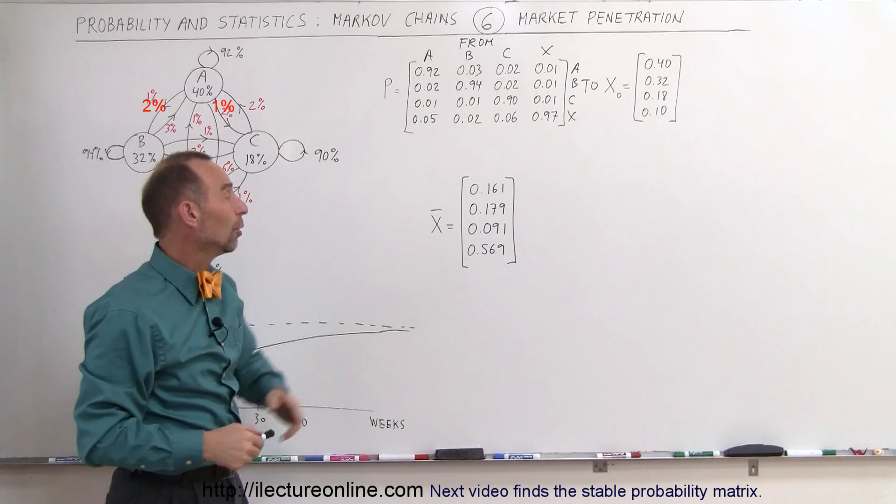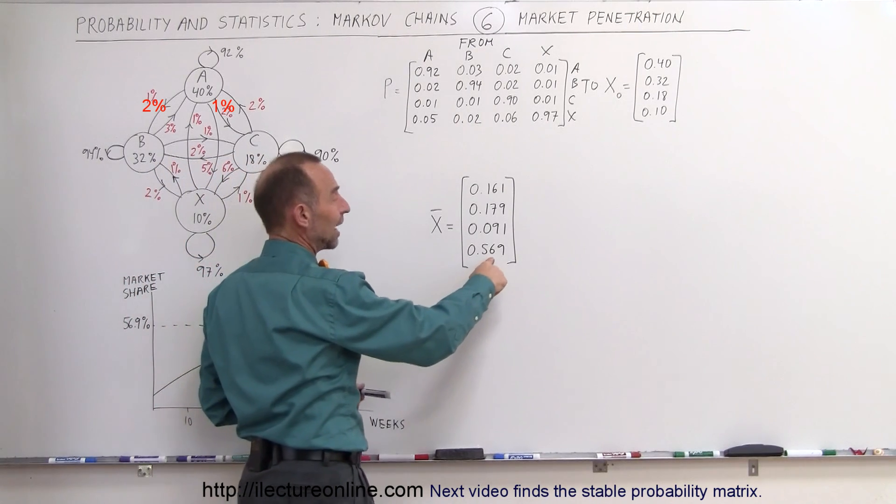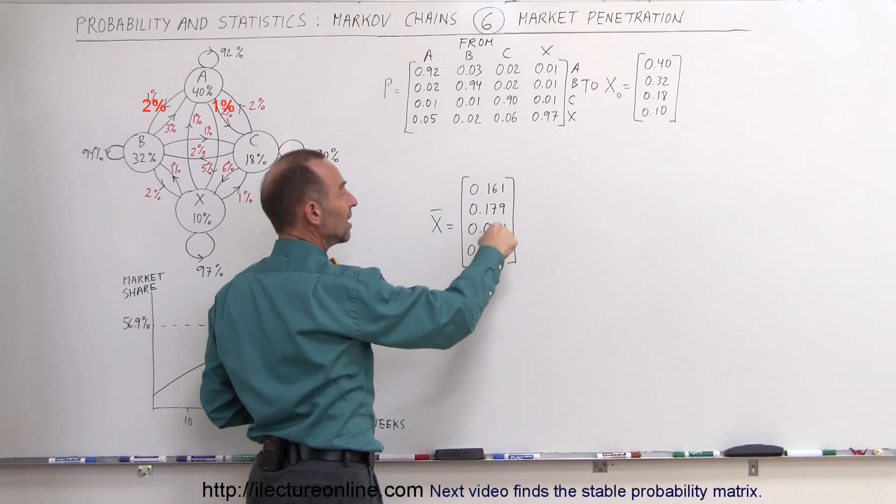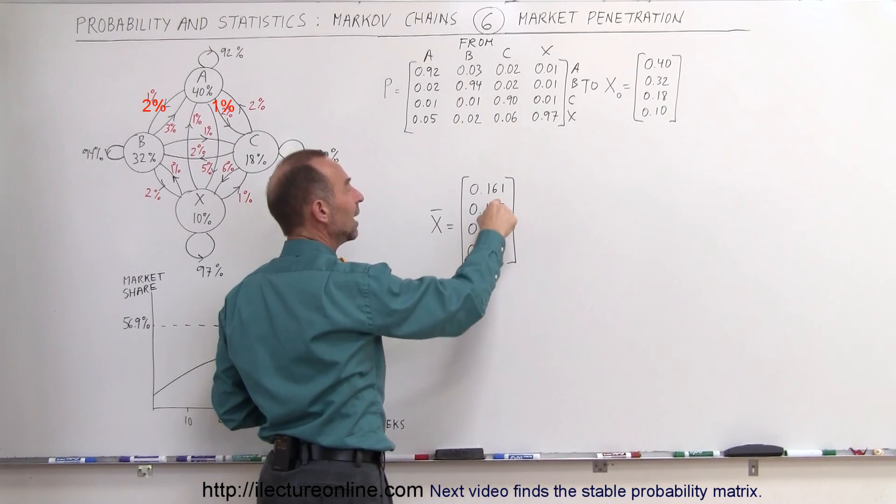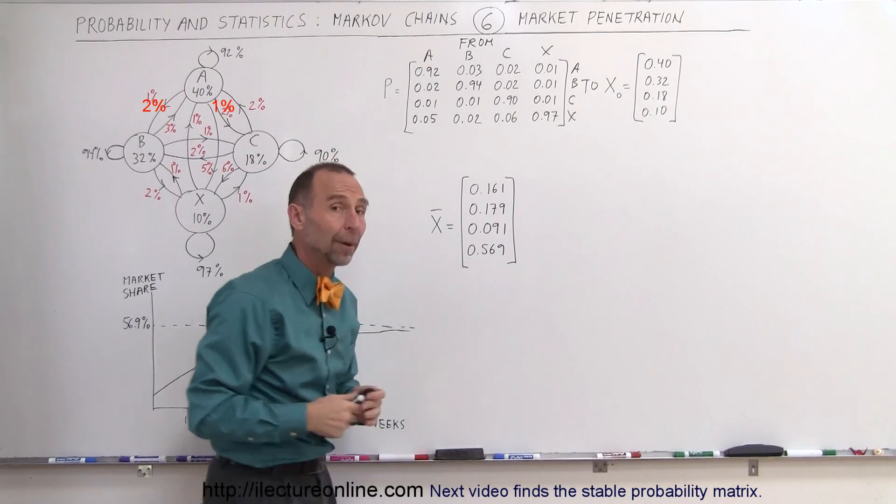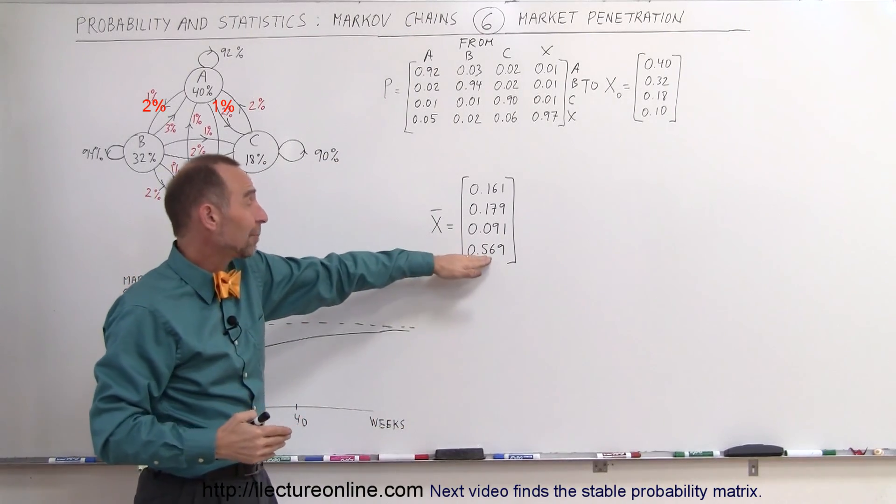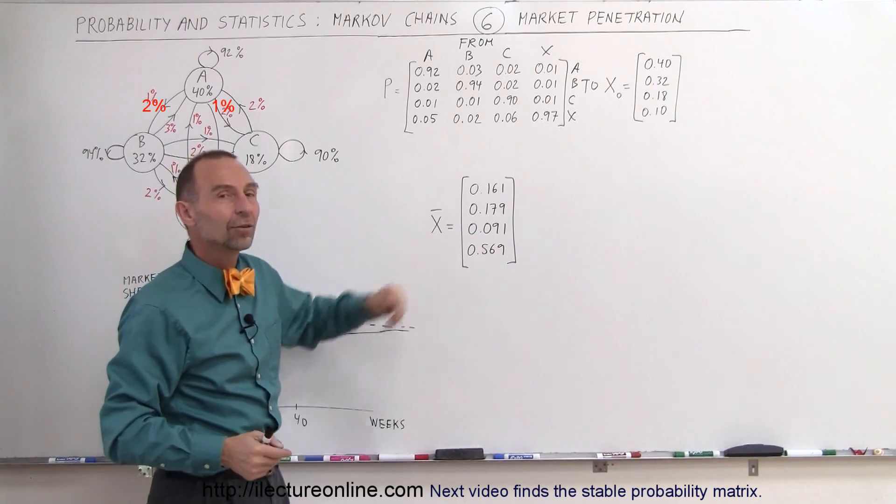We then come to an equilibrium point where now we can see that 56.9% will buy brand X, 9.1% will buy brand C, 17.9% will buy brand B, and 16.1% will buy brand A, which means our market penetration was very successful. We captured more than half the market out of the four brands.